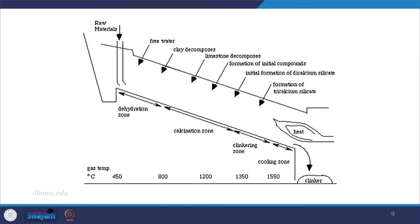Inside the kiln, there is a differential temperature — lower at the entry end and higher further inside. As material enters, free water evaporates, then clay and limestone decompose with increasing temperature. They fuse together forming products including dicalcium silicate, tricalcium silicate, tricalcium aluminate, and tetracalcium aluminoferrite.